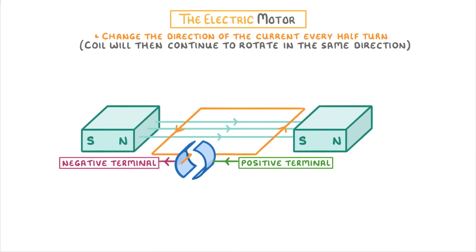This means that the coil will experience clockwise forces and begin to rotate, moving the split ring commutator around with it.